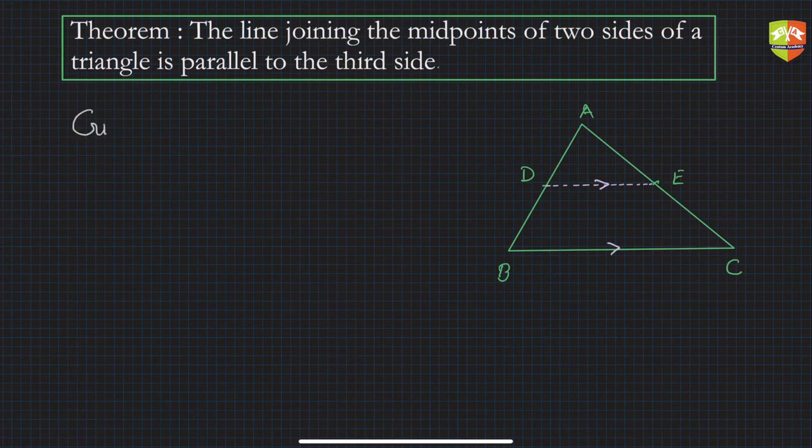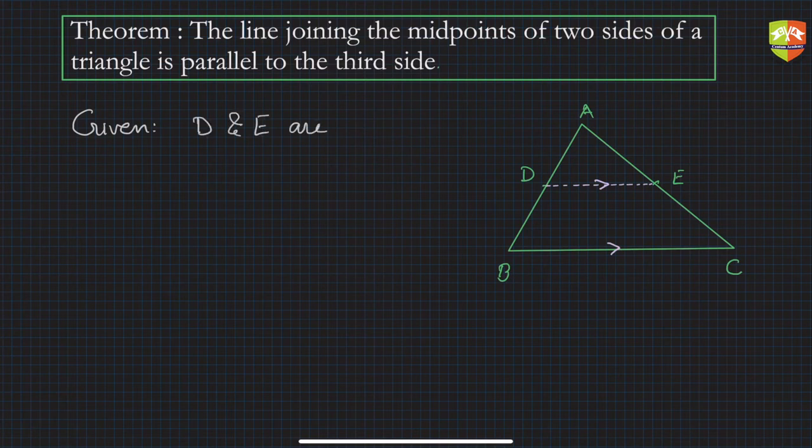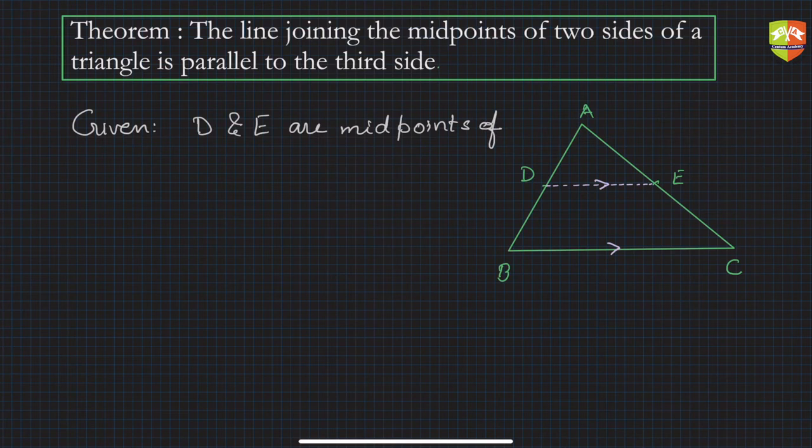So what is given? Given is D and E are midpoints of AB and AC respectively.